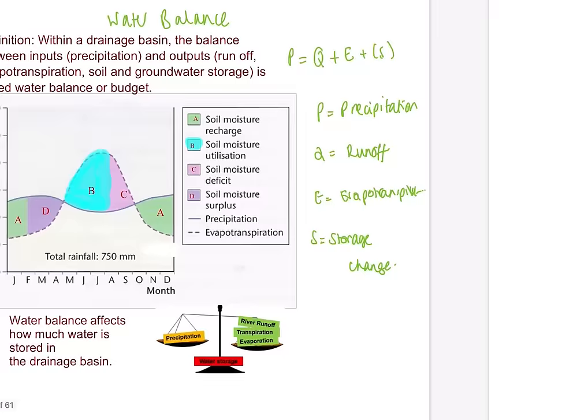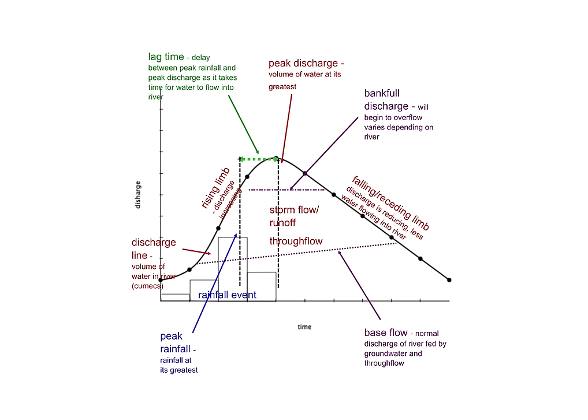From here you can apply this to your flood or storm hydrograph. Key labels: lag time is the time taken between peak rainfall and peak discharge; peak discharge is when volume of water is at its greatest; bankfull discharge is the point when it starts to overflow; rising limb is where the line starts to climb; receding limb is when it sinks back down; bars show rainfall during the event; and base flow is the normal discharge of the river.